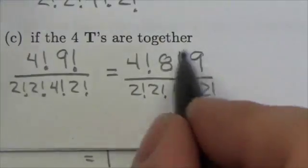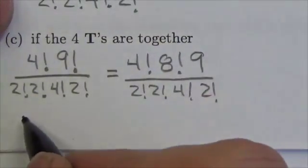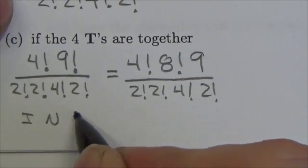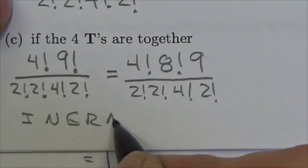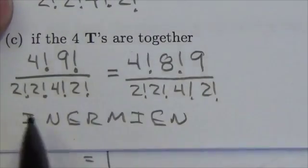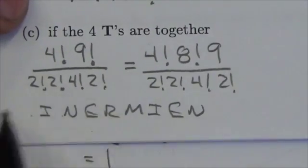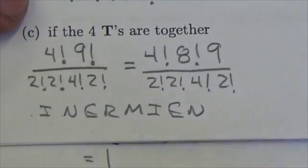Now what I mean by this is I've got the 8!. That refers to the eight other letters here. So that's going to be the I, the N, the E, the R, M, I, E, N—eight letters total. Now these are all going to get permuted according to 8!.